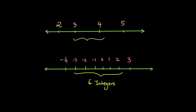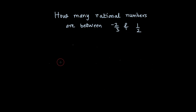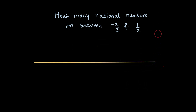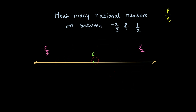But if the similar question was posed for two rational numbers, how should we go about answering that? The question is: how many rational numbers are between -2/3 and 1/2? Drawing a number line, -2/3 is on the left and 1/2 lies to its right. I know there is 0 in between, since 0 can be represented as 0/1 or 0/2 — so 0 is a rational number. I have found one rational number.